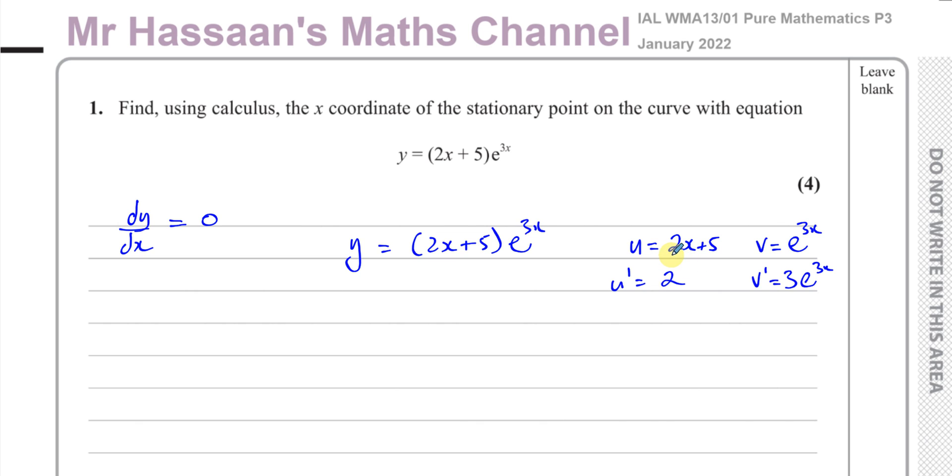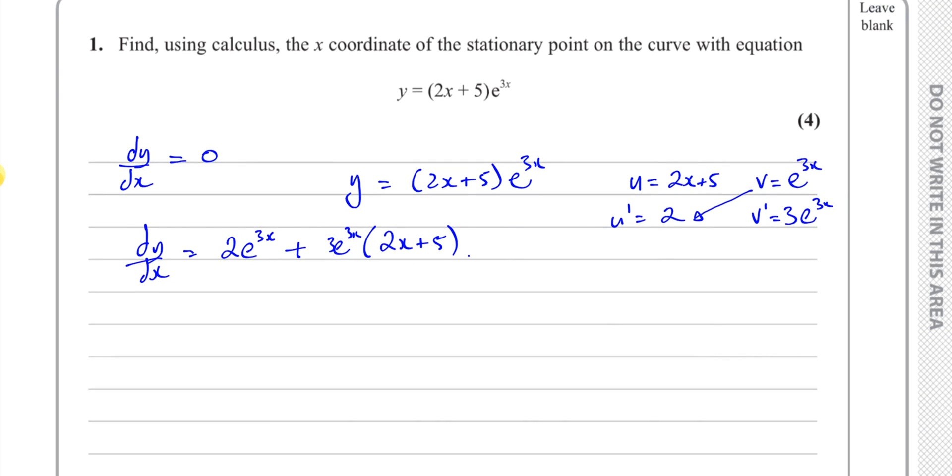Now a lot of people, they use the product rule, u times v dash plus v times u dash, and that's perfectly fine. I just like to do this first, because for the quotient rule, you have to do it this way first, because you're subtracting this times that, minus that times that. So I like to stick to just one way. Start from the top right and come down. So you'll notice that maybe my answers are in the opposite direction to the, or opposite order to the mark schemes. So e to the power of 3x times 2, and that's 2 e to the power of 3x plus, and you're going to have 2x plus 5 times 3 e to the power of 3x, so that's like 3 e to the power of 3x multiplied by 2x plus 5. Okay, so that is dy dx.